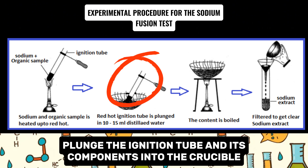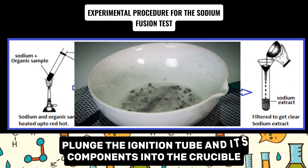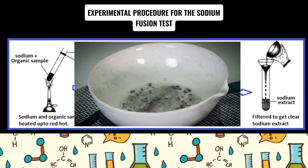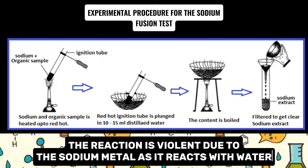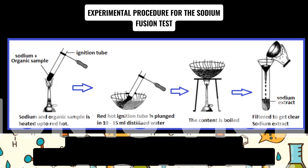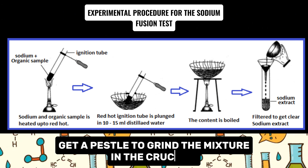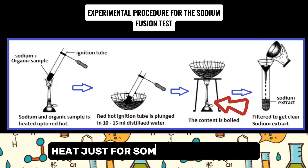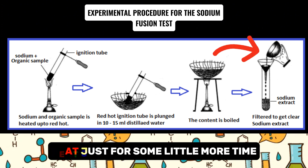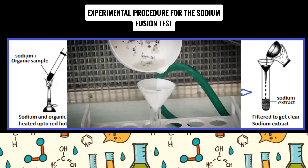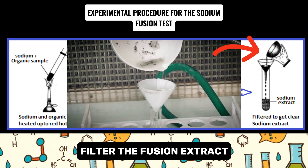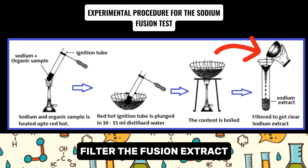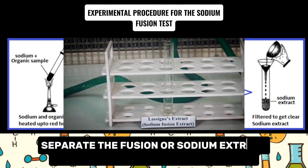Once the tube is red hot, plunge it into the crucible as you can see in this picture. This will produce a crackling, somewhat violent reaction, so be careful. Once that is done, use a pestle to grind the contents. After grinding, heat it further over the crucible if needed, then filter the fusion extract as shown here.